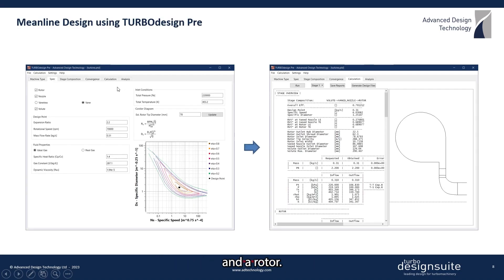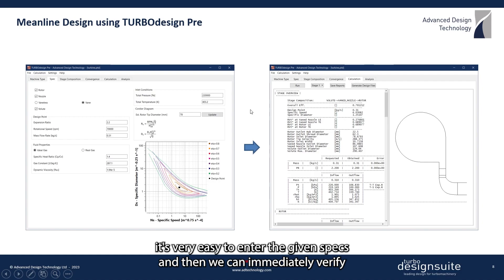Using our meanline code TURBOdesign Pre, it's very easy to enter the given specs. Then we can immediately verify that it sits in the code efficiency region of the specific speed diagram.